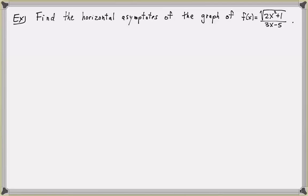Let's look at another example. Let's find the horizontal asymptotes of the graph of the function f of x, which equals the square root of 2x squared plus 1, all divided by 3x minus 5. In order to find the horizontal asymptotes, we need to find the limits of this function as x approaches infinity and as x approaches negative infinity. First, let's look at the limit as x approaches positive infinity. We're going to divide both the numerator and denominator by x, which is the highest power of x in the denominator.